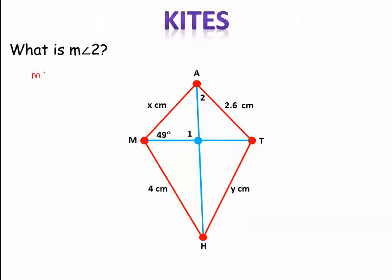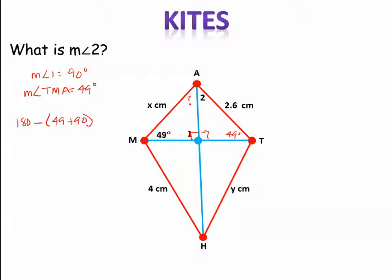We know that angle one equals 90 degrees. And then we have angle TMA, which we're going to call 49 degrees. So if we have 90 and 49, we can figure out what this angle is. We also know, because we're dealing with congruent triangles, that this is also 90 degrees here and 49 degrees. So we can use the triangle sum theorem: 49 plus 90 equals 139, and 180 minus 139 gives us 41 degrees for the measure of angle two.